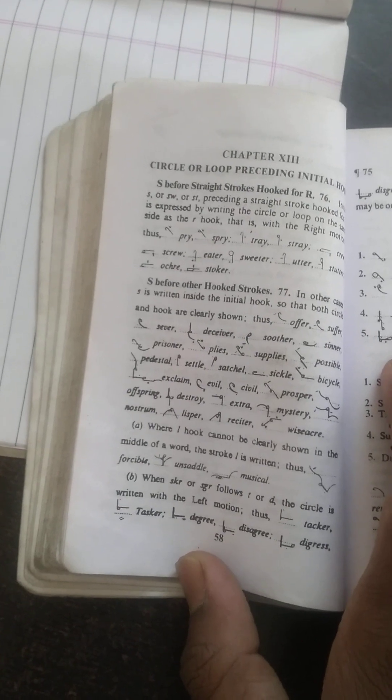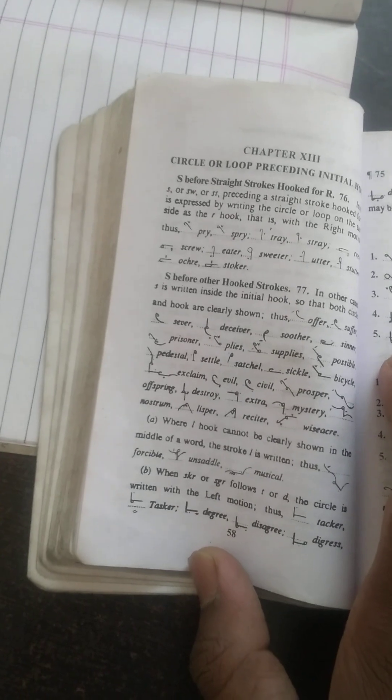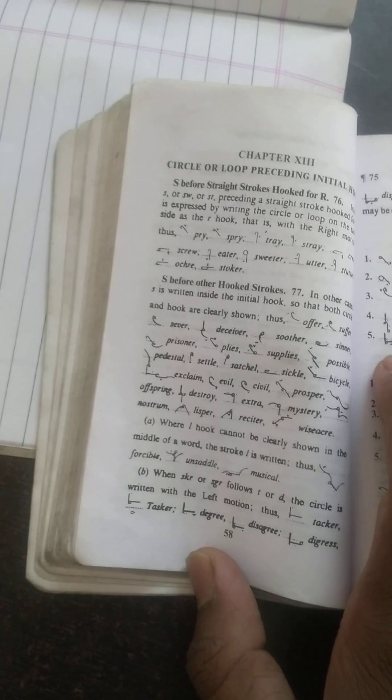When hill cannot be clearly shown in the middle of the word, the stroke hill is written. Forcible, unsaddle, musical. SKR, SGR is good important.